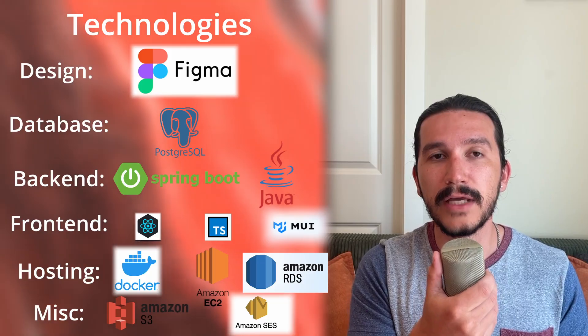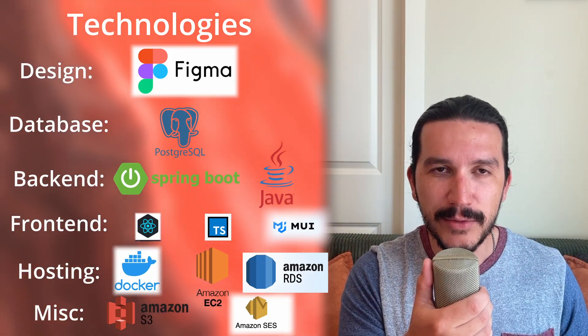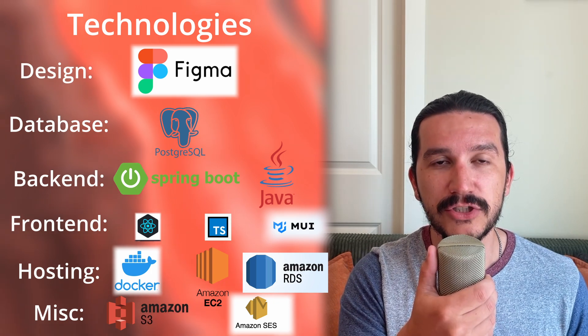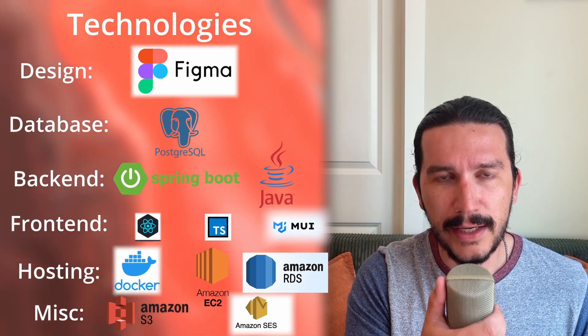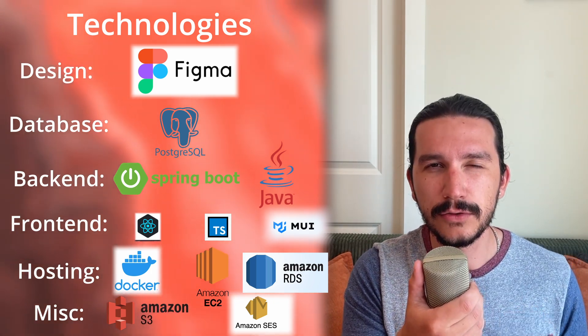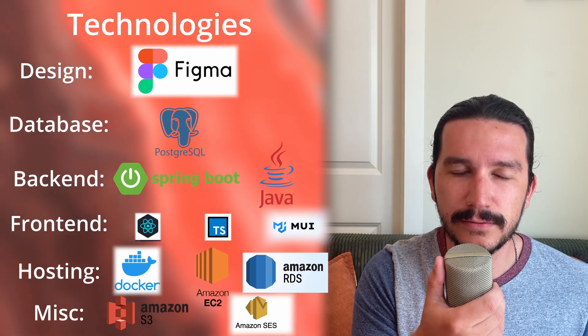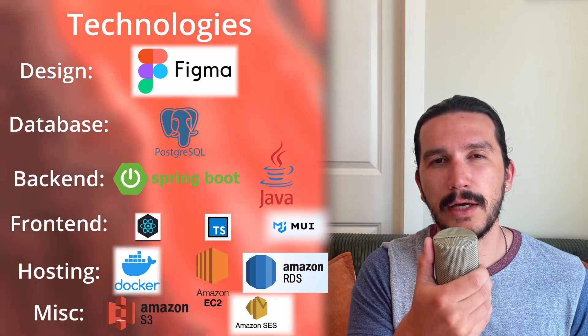Some other miscellaneous AWS services I'll be using are S3 for image storage — a user is able to add an image to a recipe, so those images will be stored in S3. I also believe I'll be using SES, Simple Email Service. There is a component of Dinnerbee where a user is able to invite a guest user to a calendar, and I'll be handling the email sending portion of that through SES.